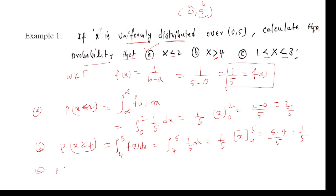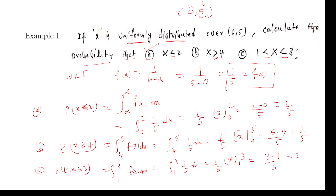For P(1 ≤ X ≤ 3): the limits are already given as 1 to 3. Integral from 1 to 3 of f(x) dx equals integral from 1 to 3 of (1/5) dx. Taking 1/5 outside, integrating gives x from 1 to 3, so upper limit 3 minus lower limit 1, divided by 5, equals 2/5. Like this we can easily calculate the probability. This is very important for university exams. If you have any doubts or suggestions, thank you.